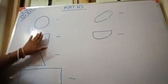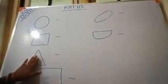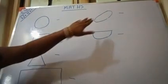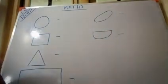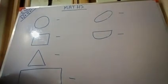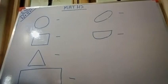So to summarize: this is circle, this is square, this is triangle, rectangle, oval, and half circle. We will proceed with these one by one. We have already discussed circle in an earlier online class and done the page in the book as well.